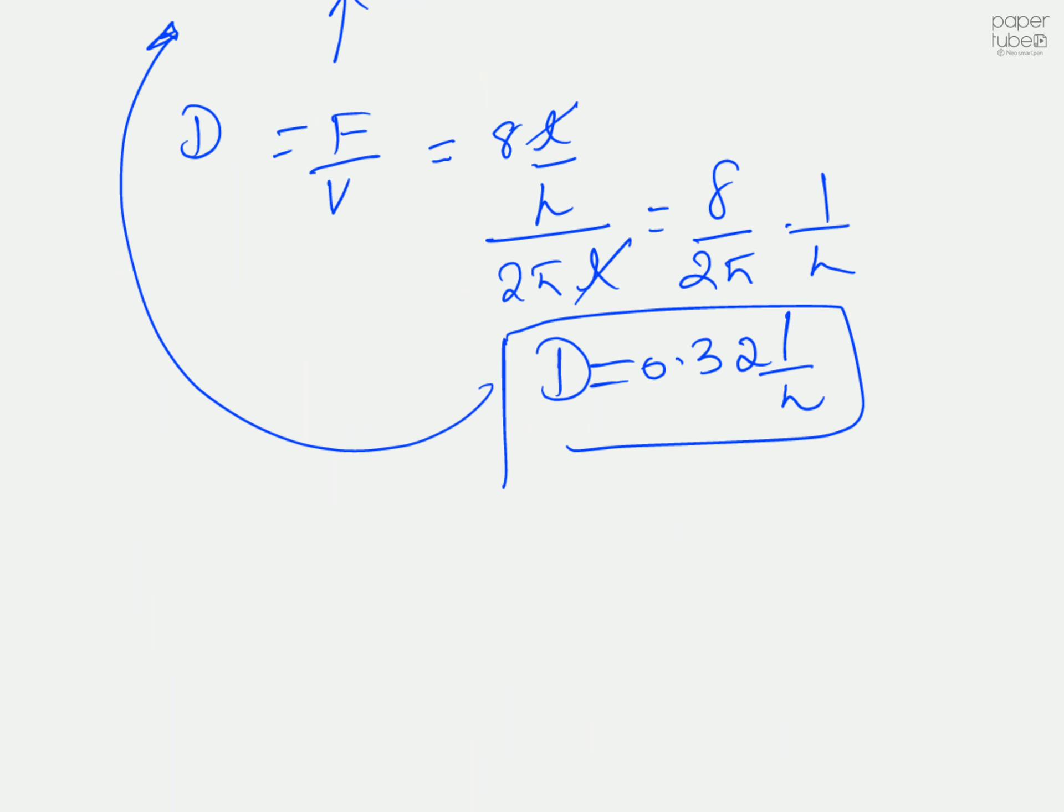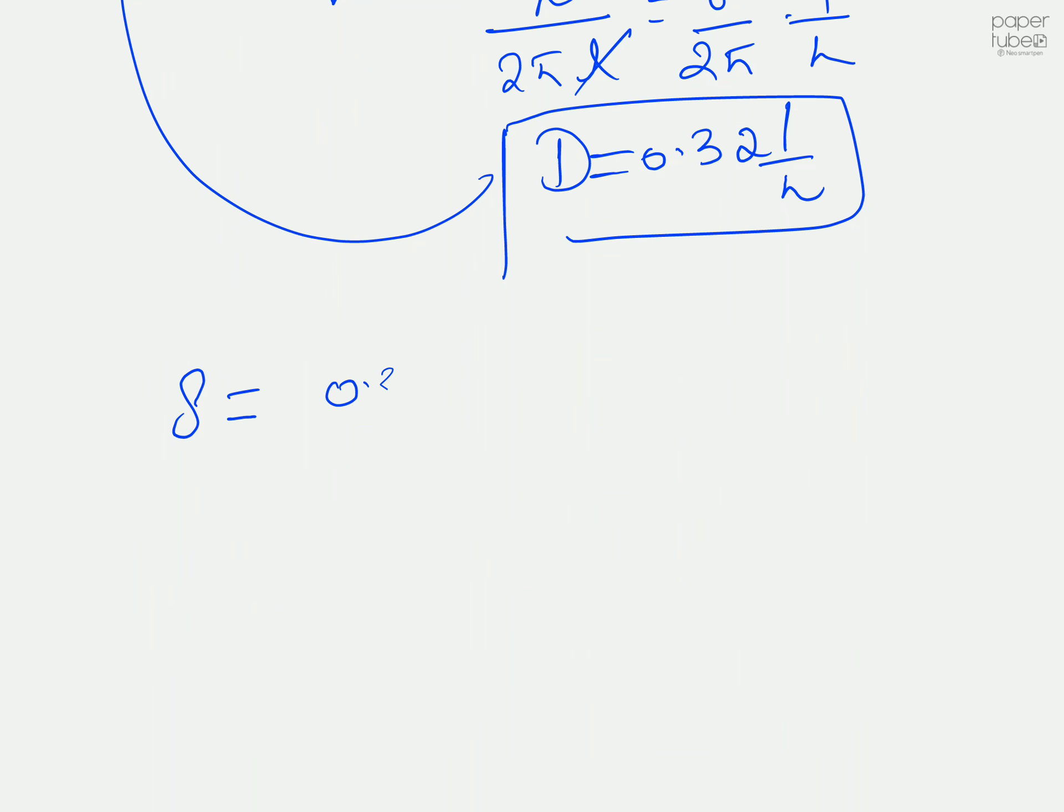All you need is to substitute in this expression. s equals 0.32 multiplied by ks which is 10.5, divided by your specific growth rate 0.45 minus dilution factor 0.32. Pay attention to the units. This gives milligrams per liter.